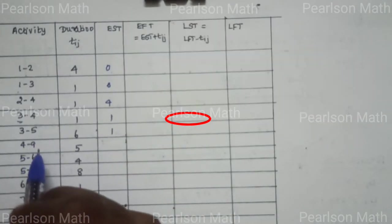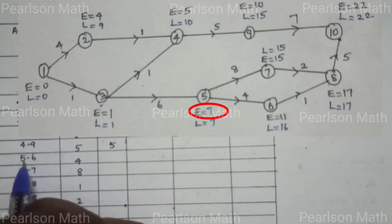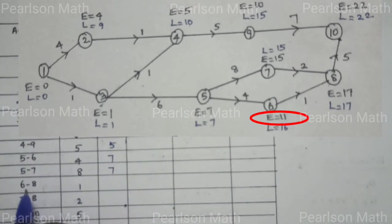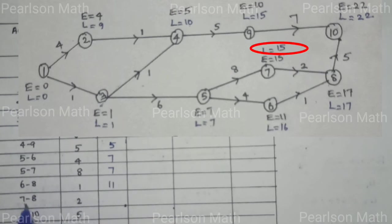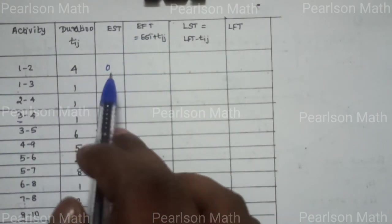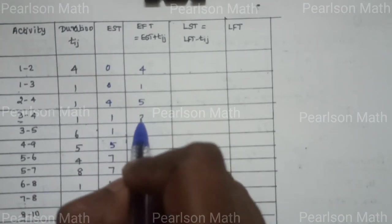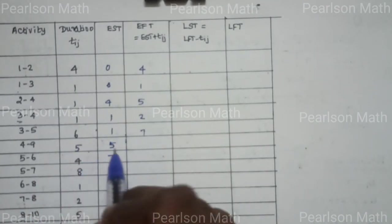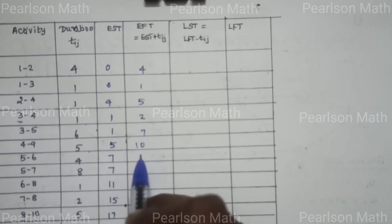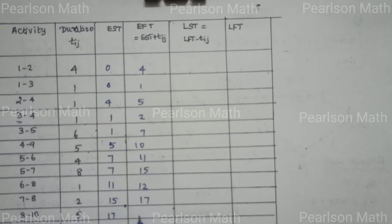The early start times (E values) for nodes: E1=0, E2=1, E3=1, E4=5, E5=2, E6=7, E7=5, E8=7, E9=11, E10=15, and E node=17. EFT equals EST plus duration (Tij): 4+0=4, 1+0=1, 1+4=5, 1+1=2, 6+1=7, 5+5=10, 4+7=11, 8+7=15, 1+11=12, 2+15=17, 5+17=22.